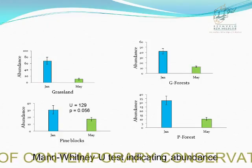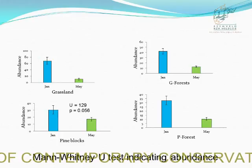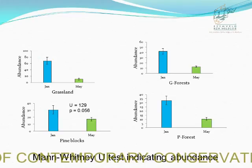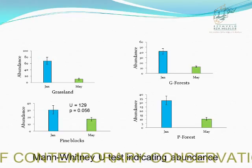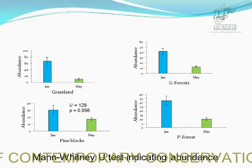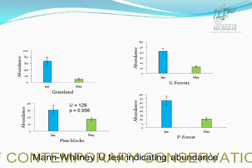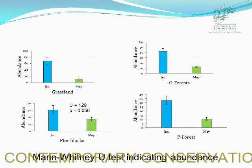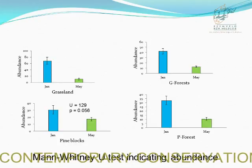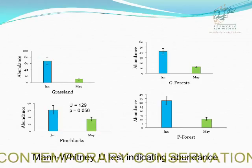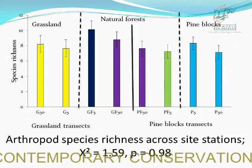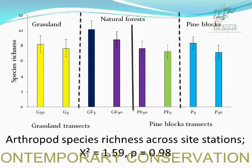We think one reason why there were no significant differences in the pine blocks is because pine blocks are known to support generalist and exotic species that are able to adapt in a variety of habitats. High species richness and abundance found in summer compared to winter could be due to warm temperatures resulting in increased food availability, which allows arthropods to expand their ranges.